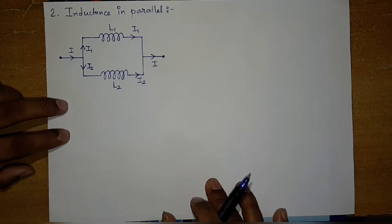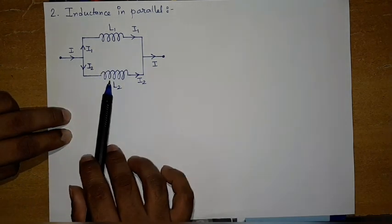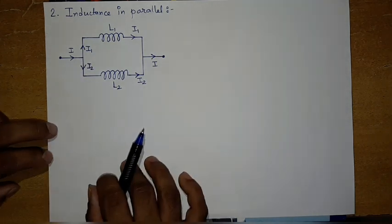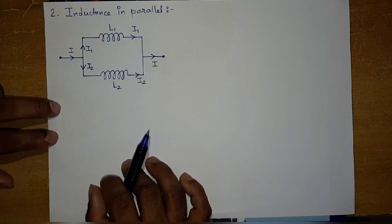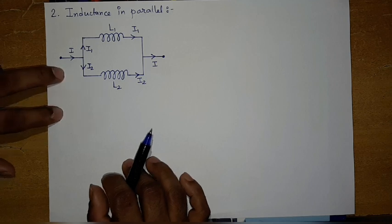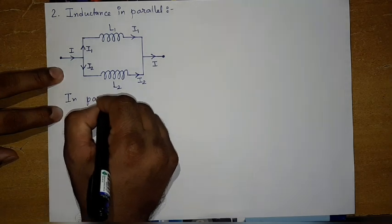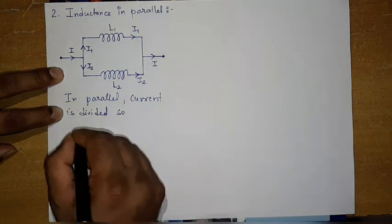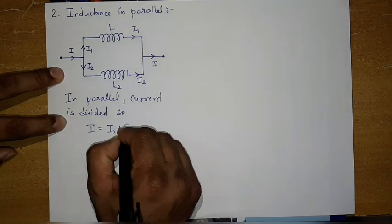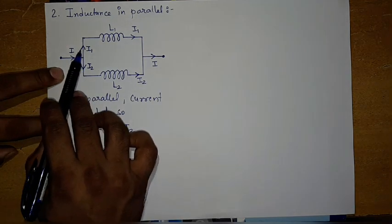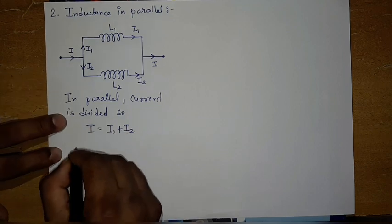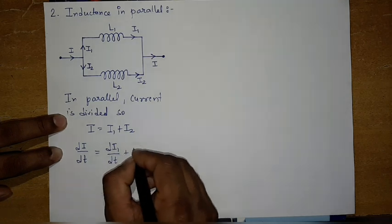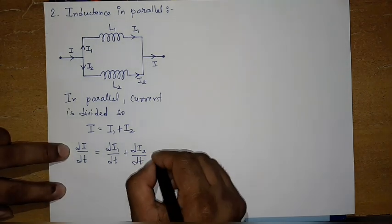Now this is inductance in parallel. As you see here, two coils L1 and L2 are connected in parallel. In this case, the current is distributed but the EMF epsilon is constant across both coils. Whenever two coils are connected in parallel, the total current I is divided into the two coils, so we write total current I equals I1 plus I2. Differentiating, di/dt equals di1/dt plus di2/dt — let this be equation 1.